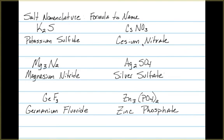And that anion could be a monatomic ion such as the sulfide, nitride, and fluoride, or it could be a polyatomic ion such as the nitrate, sulfate, and phosphate.